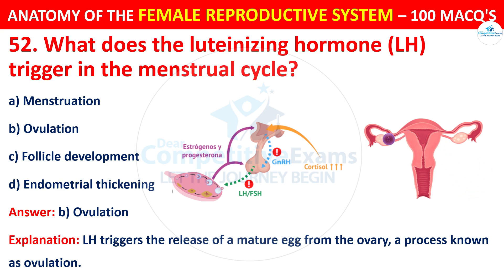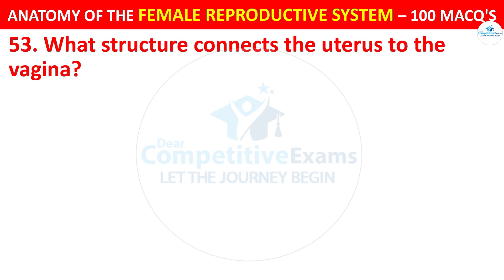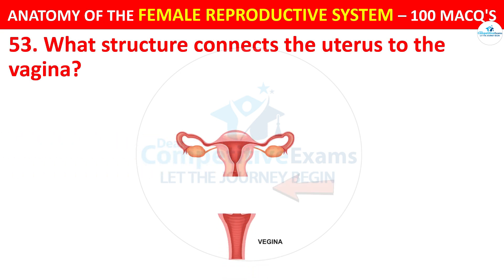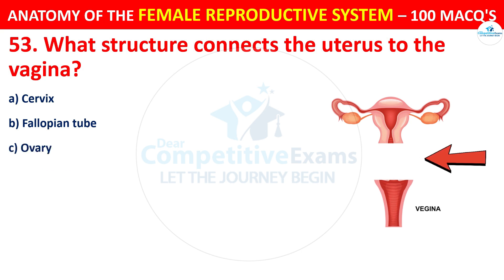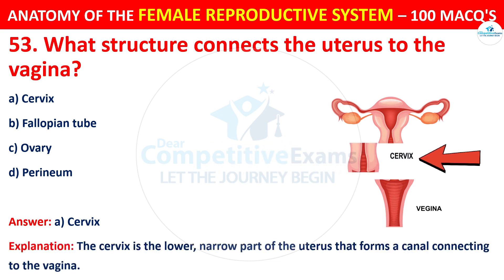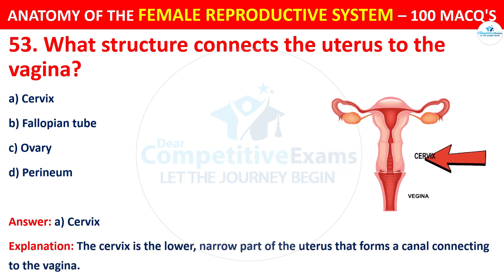Question number 53. What structure connects the uterus to the vagina? Options: cervix, fallopian tube, ovary, or perineum. The correct answer is A — the cervix. The cervix is the lower narrow part of the uterus that forms a canal connecting to the vagina.